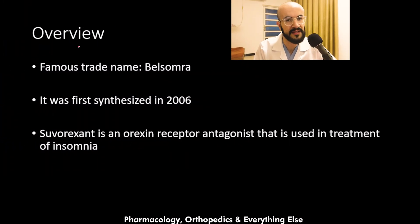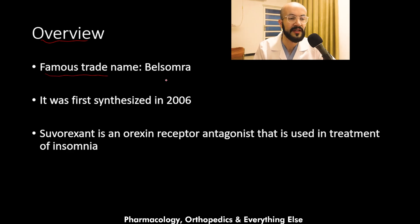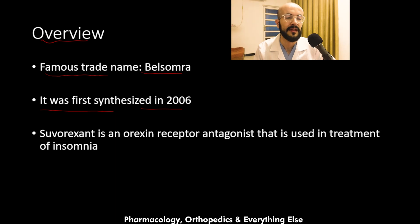Here is an explanation for the sleep medication Suvorexant. Starting with an overview, a famous trade name for Suvorexant is Belsomra, and it was first synthesized in 2006. Suvorexant is an orexin receptor antagonist that is used in the treatment of insomnia.